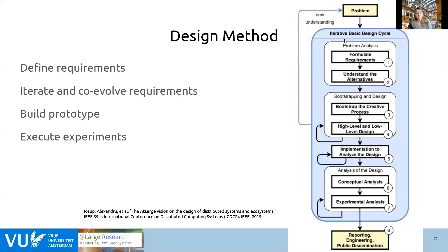We designed our experiments and experimental tool according to the design methods introduced by the at-large design team. This design method is illustrated by the model shown here. Most importantly, we started by defining the requirements, then iterated and co-evolved over these requirements. From these requirements, we built a prototype to execute the experiments and exhaustively tested it before actually executing the experiments.